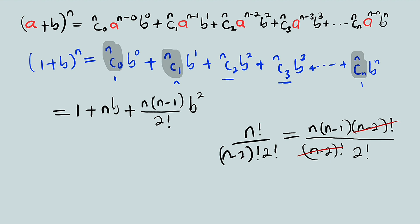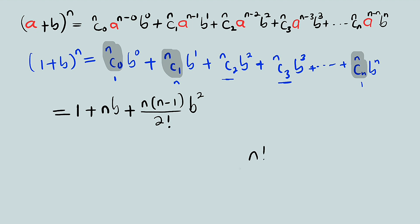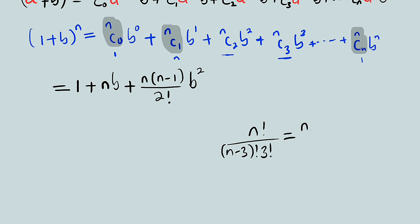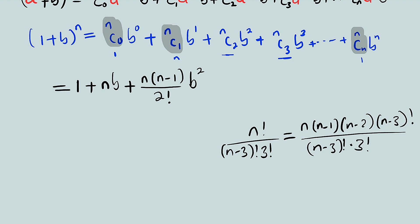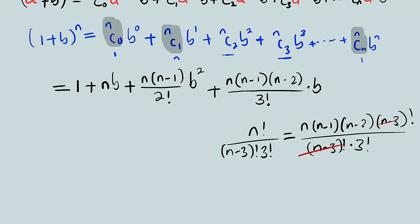Let us take nC3. nC3 is n factorial divided by (n minus 3) factorial times 3 factorial. Breaking this down: n times (n minus 1) times (n minus 2) times (n minus 3) factorial, divided by (n minus 3) factorial times 3 factorial. The (n minus 3) factorials cancel, giving us n times (n minus 1) times (n minus 2) divided by 3 factorial. So the next term is plus n(n-1)(n-2) divided by 3 factorial times b to the power of 3.